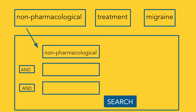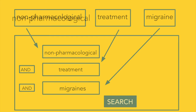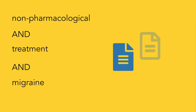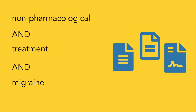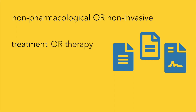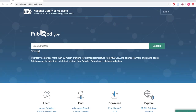You can then connect these keywords with the word AND to conduct a search. This will make your search more specific and narrow by only showing you articles that contain all three of these terms. You can also broaden your search by identifying similar keywords or synonyms and connecting them with the word OR. This will show you articles and resources that contain either of the terms.